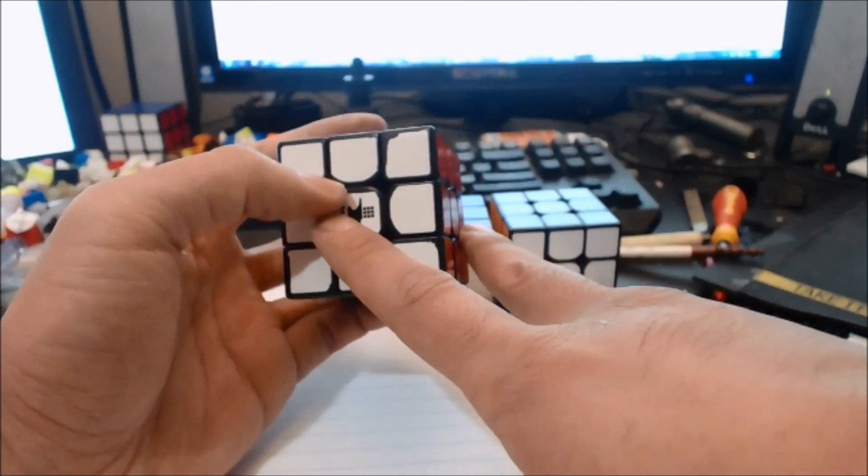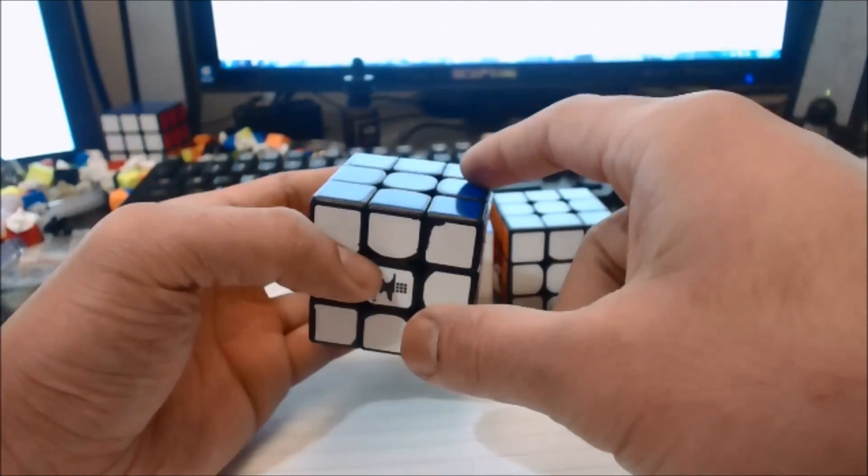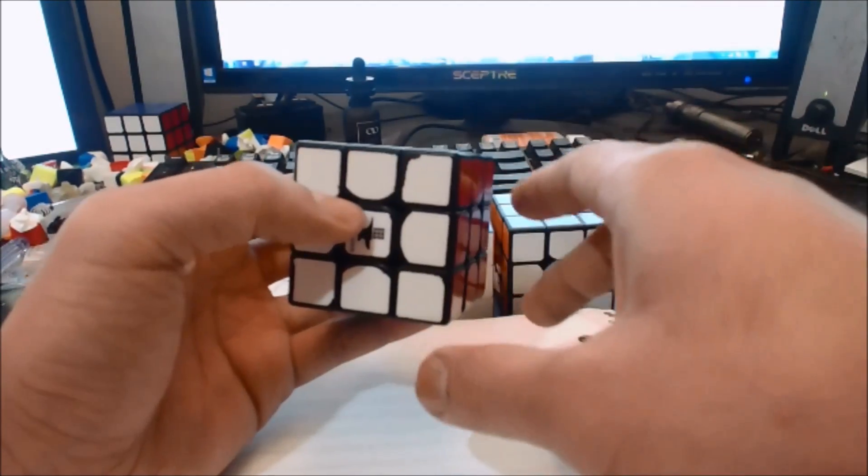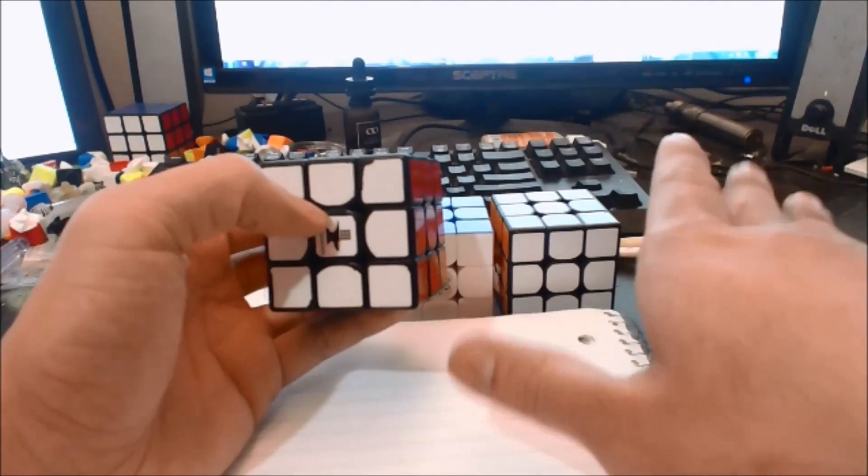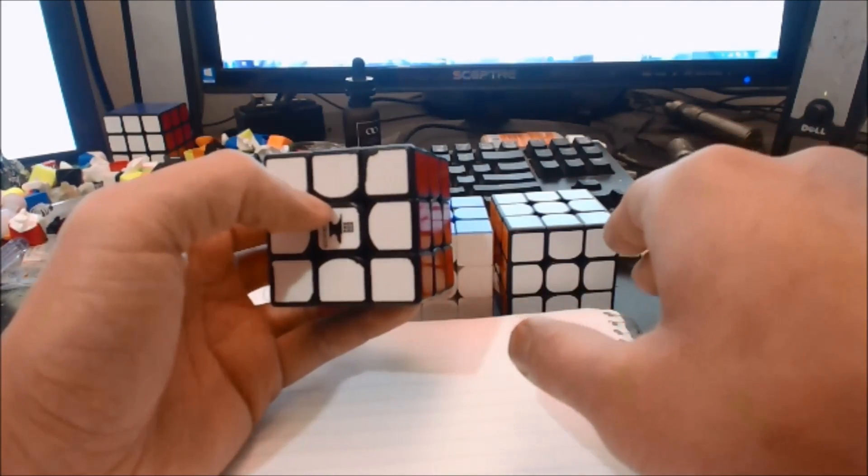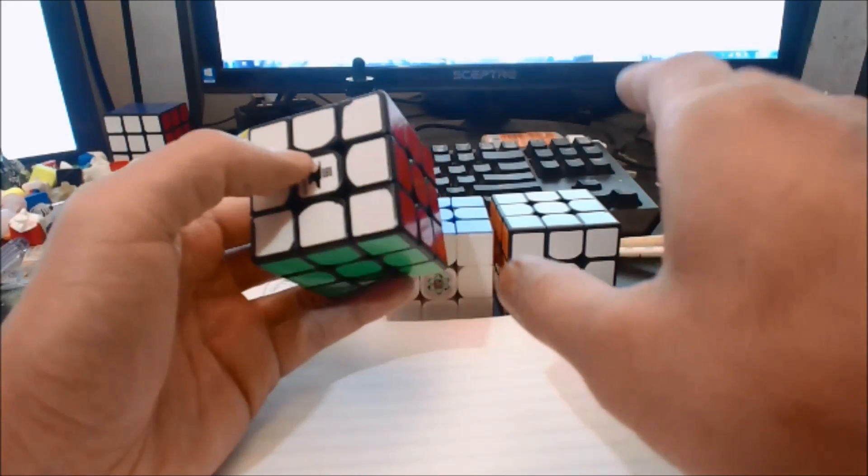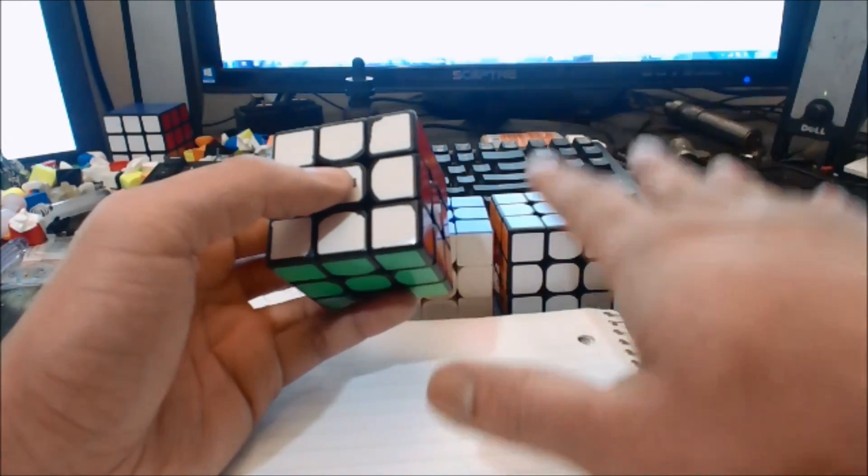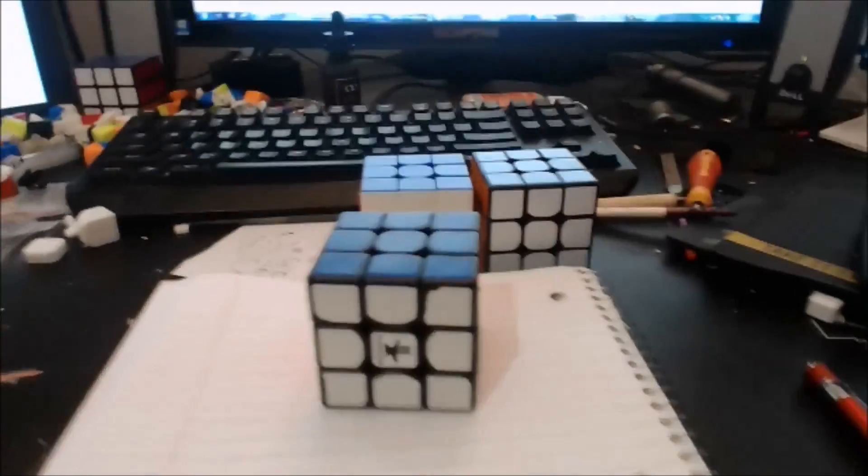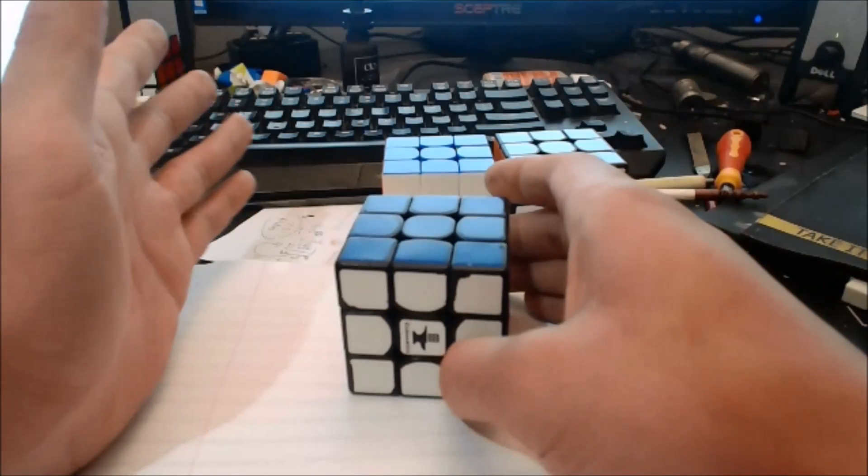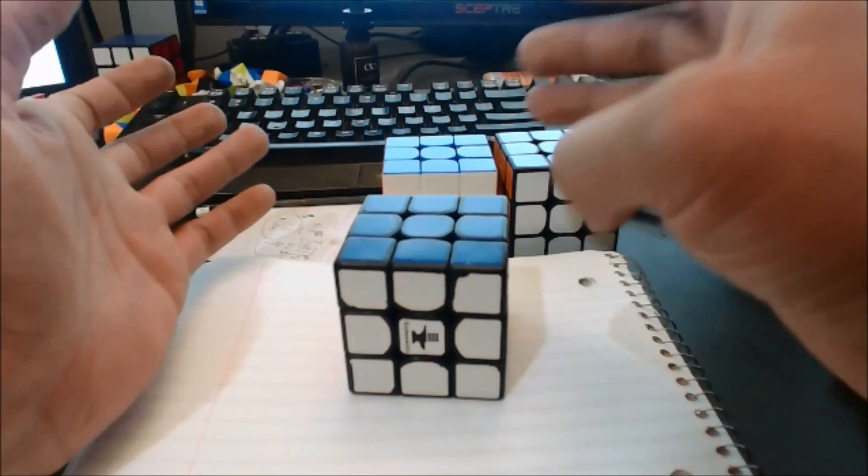Basically you get F2L-1 and then any random 1 by 1 by 2 up here, and then after you get that random 1 by 1 by 2 you solve everything all at once. It's between one to three moves, maybe even five moves if you can cancel faster than just pure ZZ or block building with ZBLL.